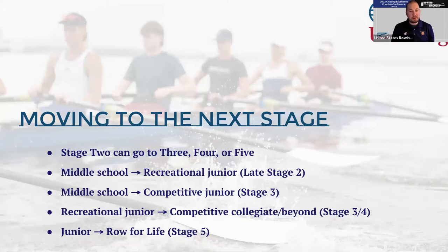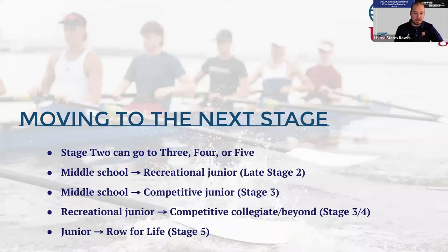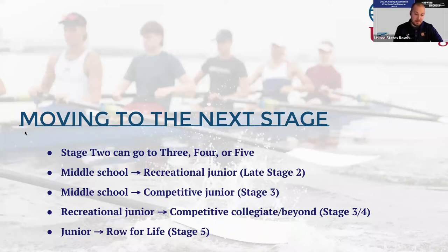Stage 2 is probably the most complex and can go the most different directions in our non-linear pathway. A middle school athlete might stay in Stage 2 as a recreational junior rower, or move into competitive junior Stage 3. It also happens that a recreational junior who's a late bloomer can walk on at the collegiate level, going from Stage 2 straight to Stage 4. Athletes can also graduate from a recreational junior program into row-for-life Stage 5.